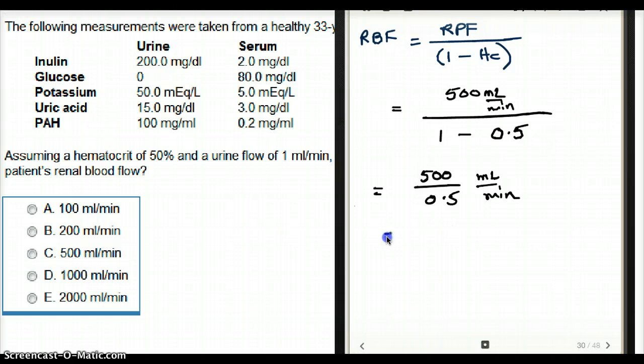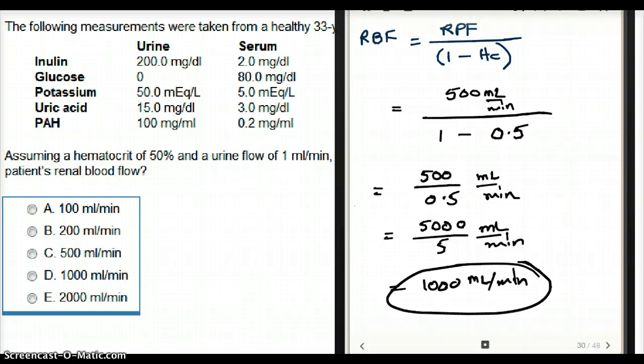So now we have 5,000 divided by 5 milliliter per minute, which is equal to 1,000 milliliter per minute. So this is going to be our renal blood flow. Answer is going to be D.